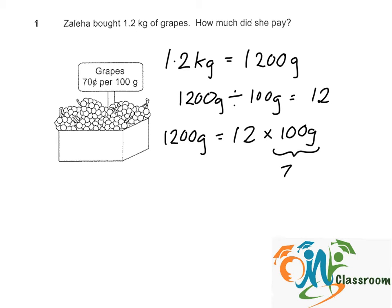the total cost for 1.2 kg of grapes will be 12 times 70 cents. That gives us 8 dollars and 40 cents.